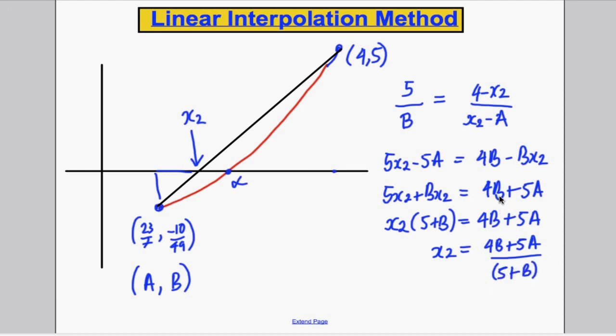And that, although it looks fairly complicated, the algebra is so much easier than dealing with decimals. All I have to do now in my calculator is type 4 lots of B plus 5 lots of A divided by 5 plus B. So 4 lots of B plus 5 lots of A, all over 5 plus B, using the recall button this time, you would get yourself x₂ is 153/47, which is equal to 3.25.